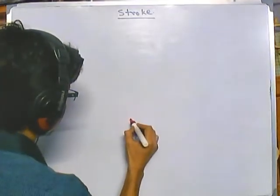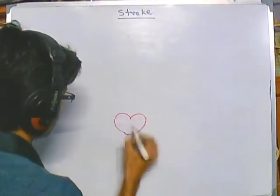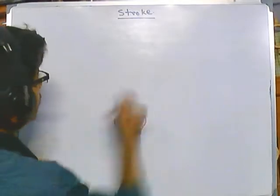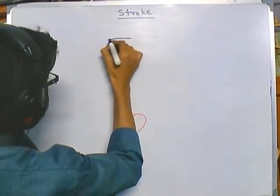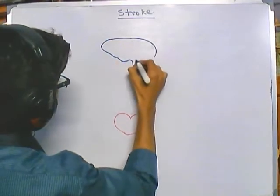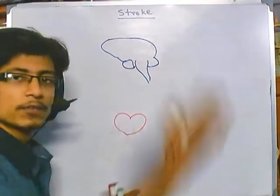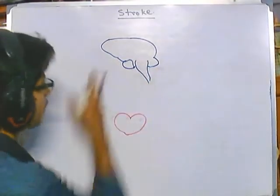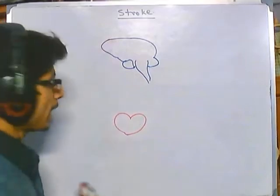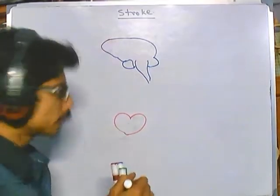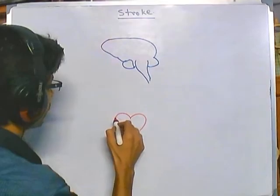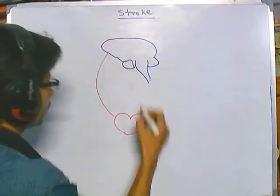We have a heart from which blood is pumped all over the body. If we draw this image, this is our heart and this is our brain. There is a flow of blood between this heart and brain, and obviously this blood flow is connected through what we call arteries.